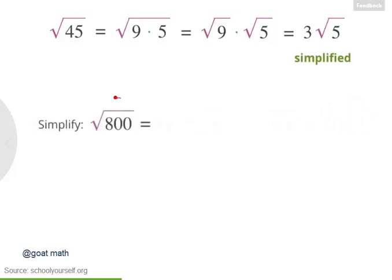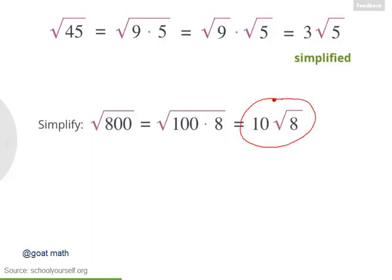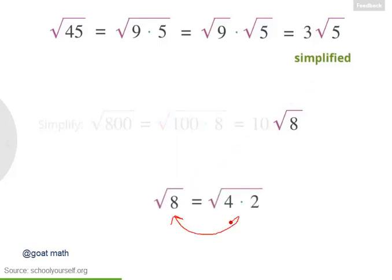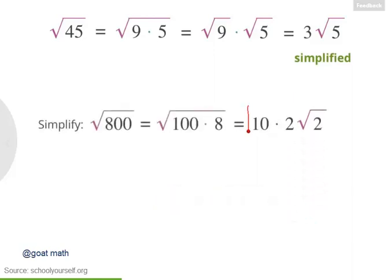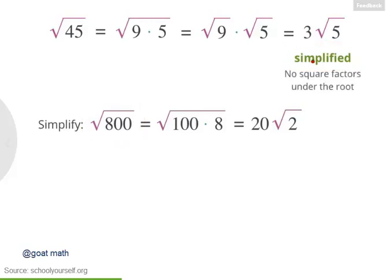Let's look at another example: the square root of 800. Well, 800 equals 100 times 8, so this might equal 10 times the square root of 8. But we can simplify further: root 8 equals the square root of 4 times 2, and the square root of 4 is 2, so root 8 equals 2 root 2. Replacing root 8 with 2 root 2, the square root of 800 equals 10 times 2 root 2, which is 20 root 2. When a square root is simplified, that means there are no square factors under the root.